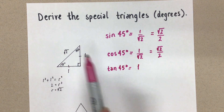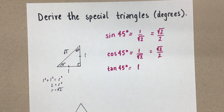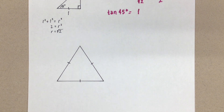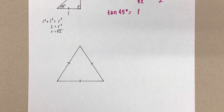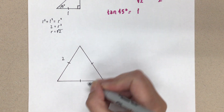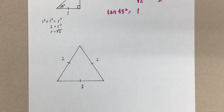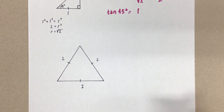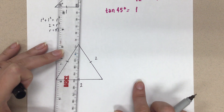Now let's talk about the special triangle for 30 degrees and 60 degrees. We actually accomplish both using one triangle. I've started with an equilateral triangle, and I'm going to say all side lengths are two. You might ask why I'm not using one — the reason is I'm going to turn this equilateral triangle into a right angle triangle. For trig ratios, we need a right angle triangle to use sine, cosine, and tangent. So I'm going to take this equilateral triangle and cut it in half exactly.